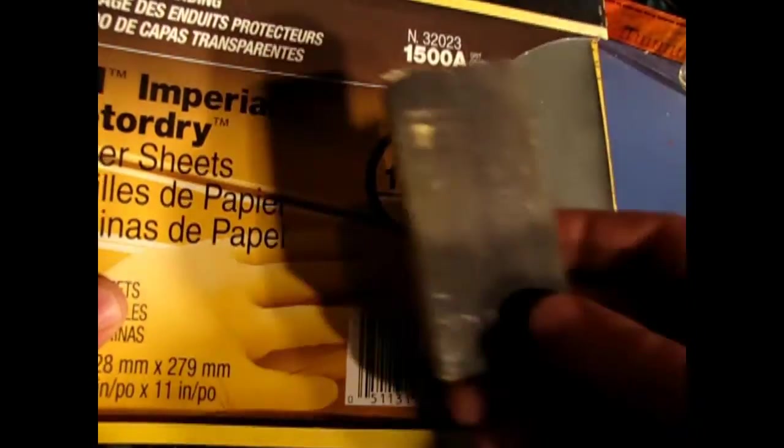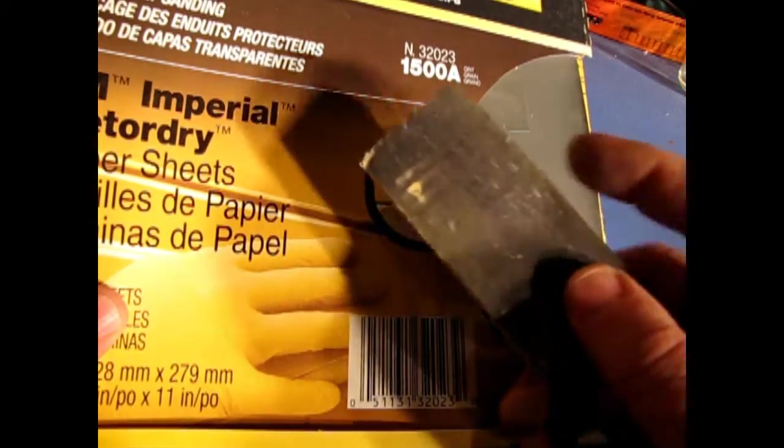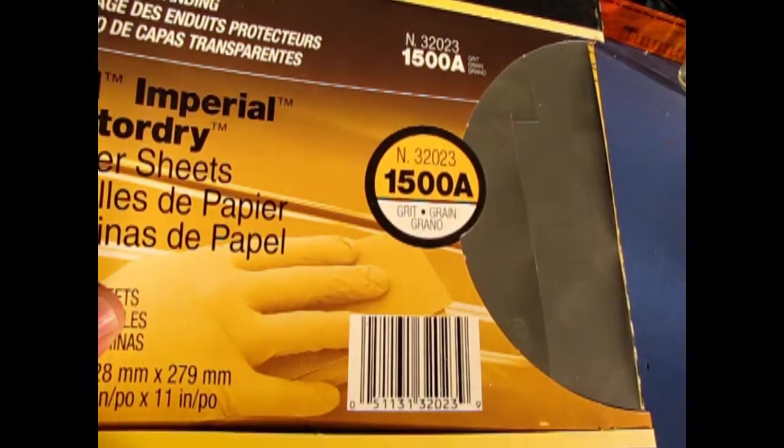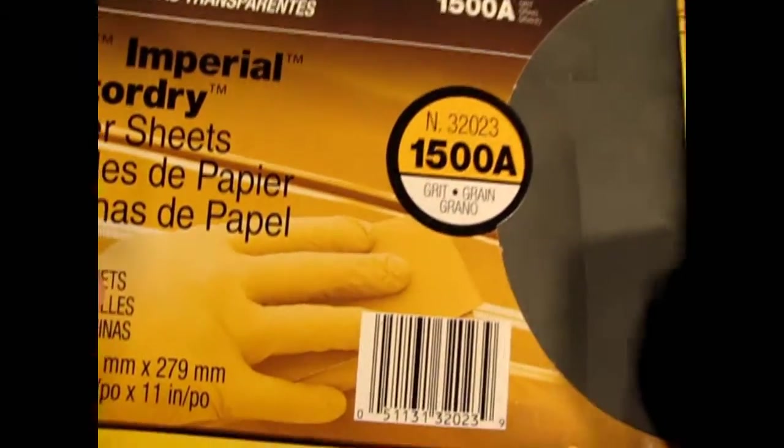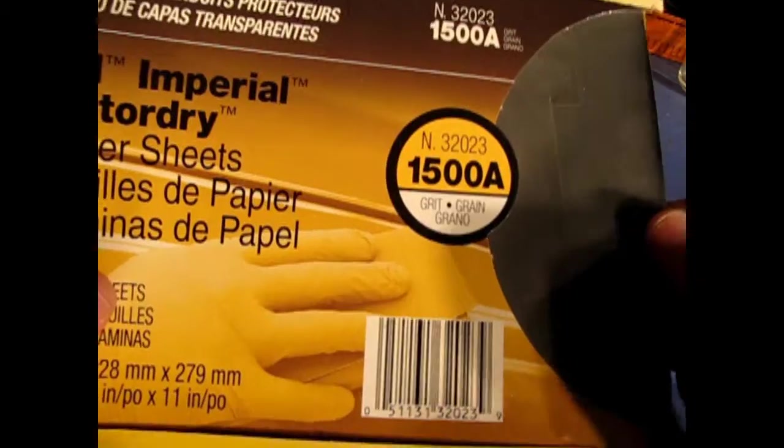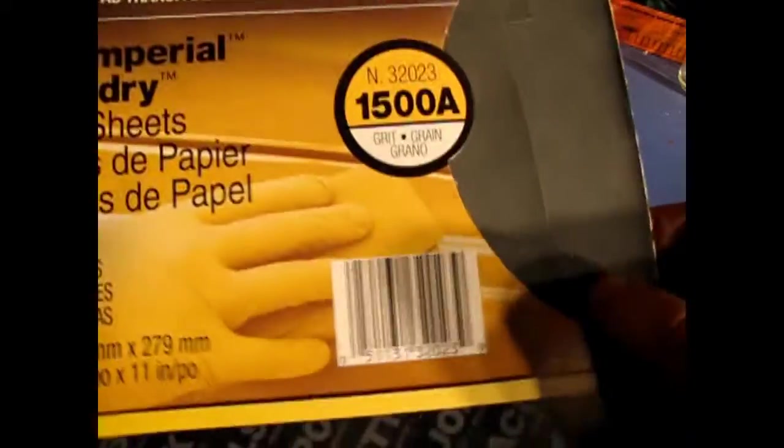And that means cutting up a bunch of pieces of sandpaper and gluing them to your block. Or you can freehand it with your fingers. It depends on the application. And when we build these models, I'll show you where and what I'm going to use for the sanding.